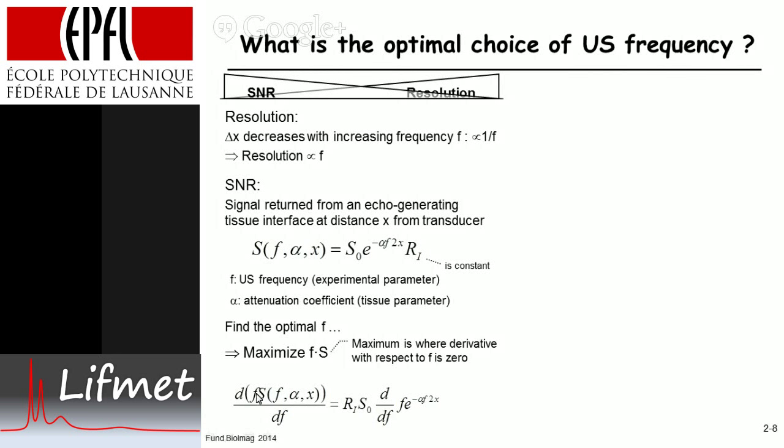Now we want to see where is the maximum where the derivative with respect to the frequency is zero, that's the maximum, the best frequency we choose. So we multiply f times s, s is a function of these parameters, and then take the derivative with respect to the frequency.